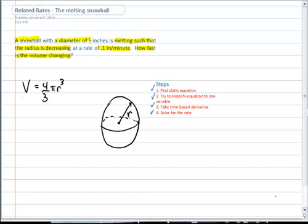Was this the equation that you and your classmates found? The volume of a sphere is 4 thirds pi r cubed.